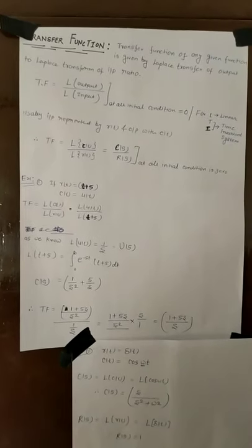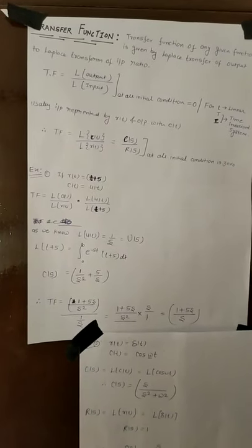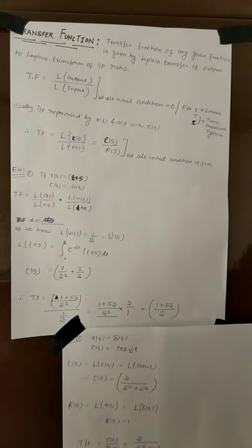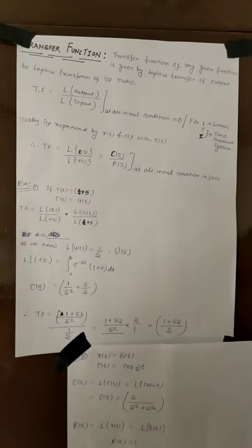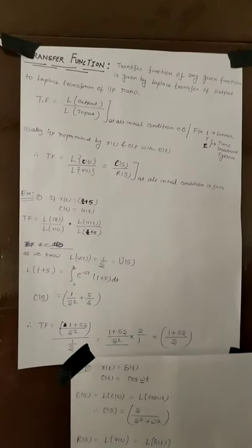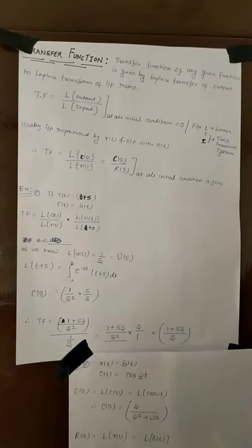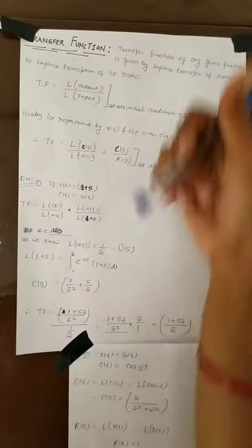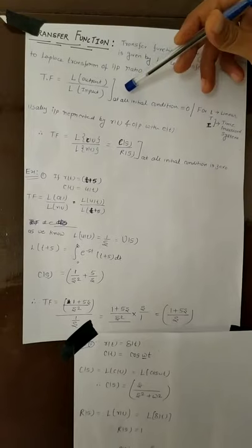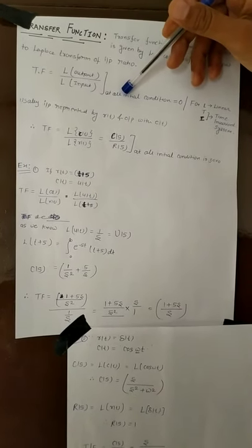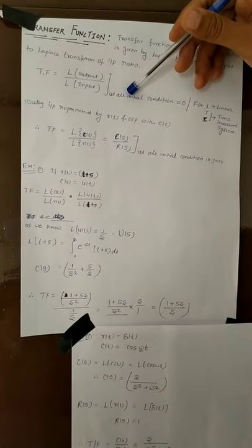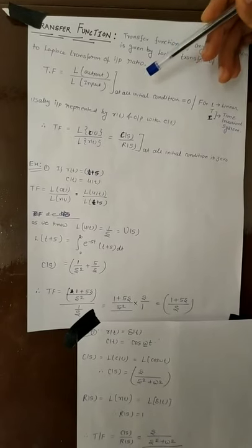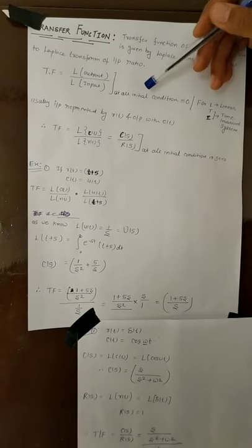Before time t equals zero, what was the state of the system — we do not need to consider that. In the conventional control system, we study the transfer function assuming the system is initially at rest. After t equals zero, we study how the system responds to different types of input signals.